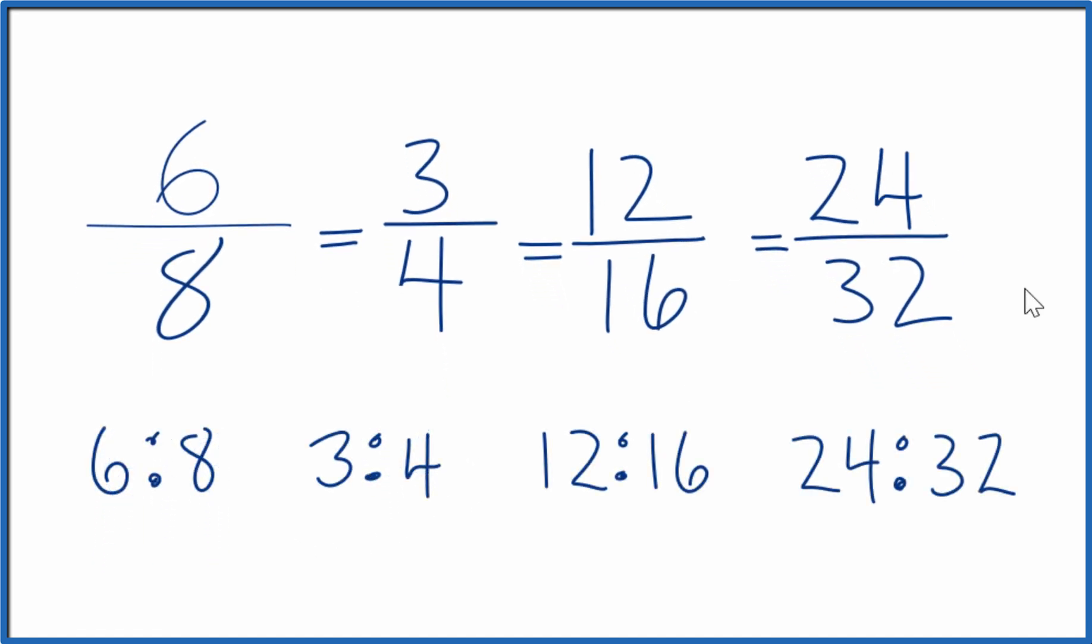So that's how you write equivalent ratios for 6 eighths. This is Dr. B. Thanks for watching.